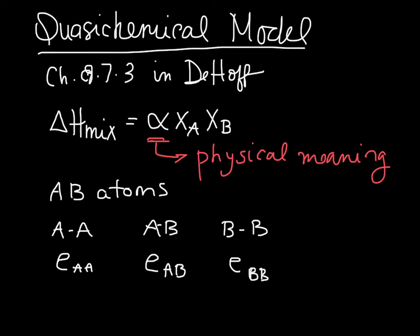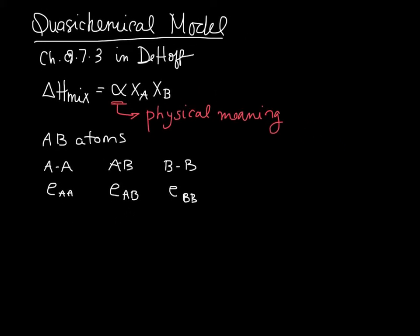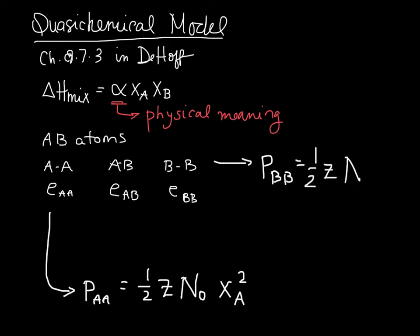We are interested in finding the number of each type of bond that is present. The number of AA bonds is one-half times Z, where Z is the coordination number, N0 is the total number of atoms in our system, and then XA squared, where XA is the composition or mole fraction of the A atoms. We have a similar expression for BB and for AB.